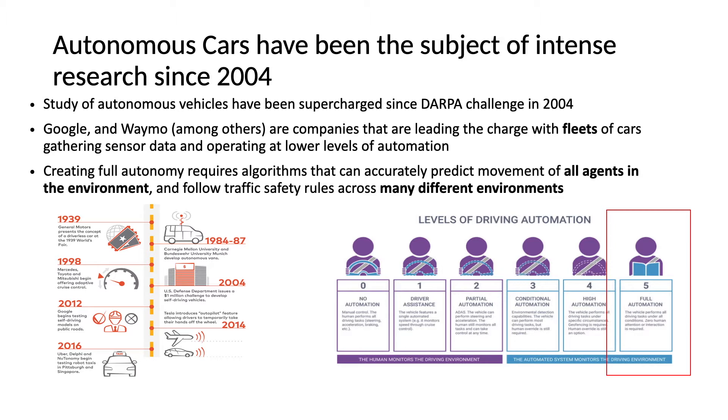Our problem specifically deals with level 5 of automation, which is full automation and full autonomy, which in a broad sense would require the vehicle to accurately predict all agents in its environment, as well as follow traffic safety rules and do this across many different environments.